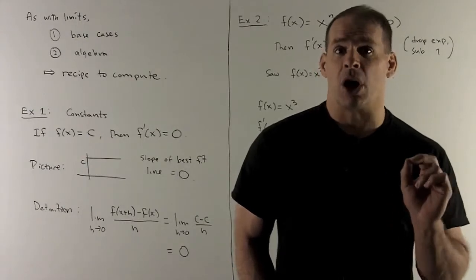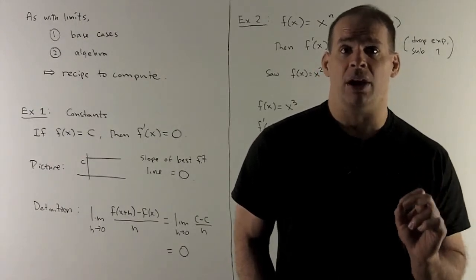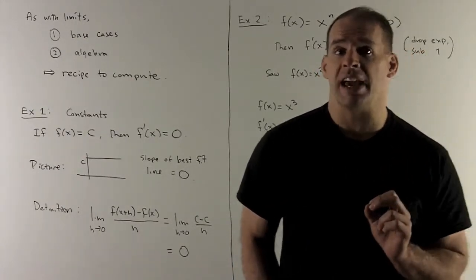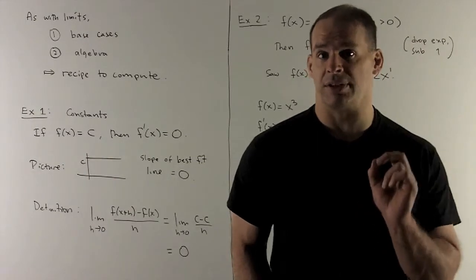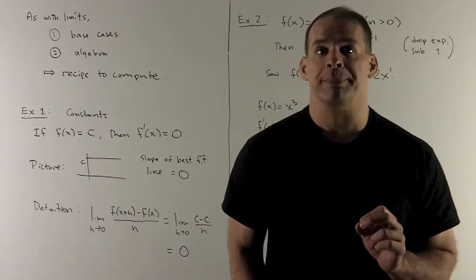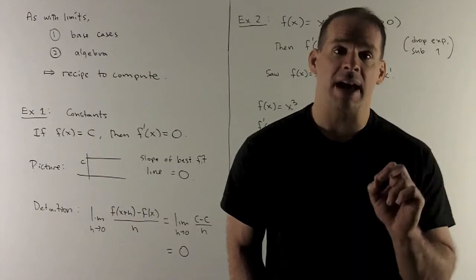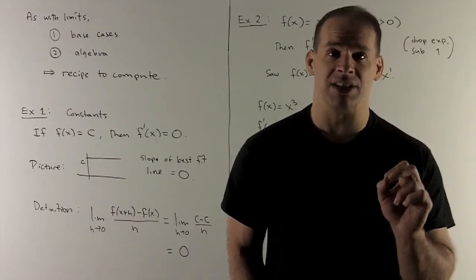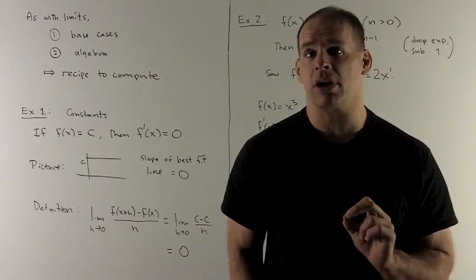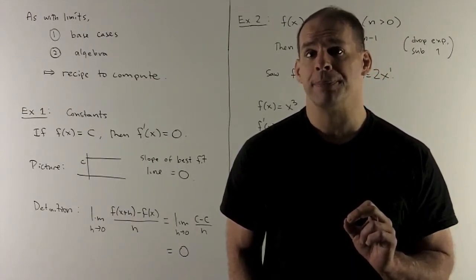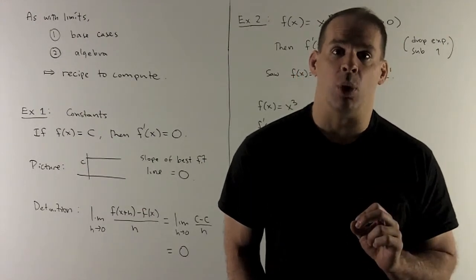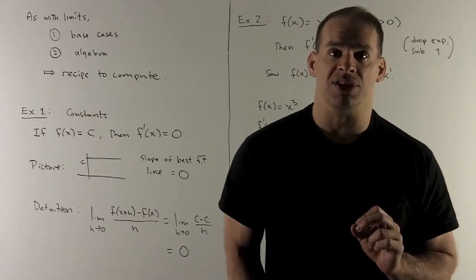Let's start by developing our base cases. Our first base case is going to be the constant functions. The rule is: if my function f of x is constant — meaning no matter what I put in, a fixed number comes out — then the derivative of that function at any point is going to be equal to zero.